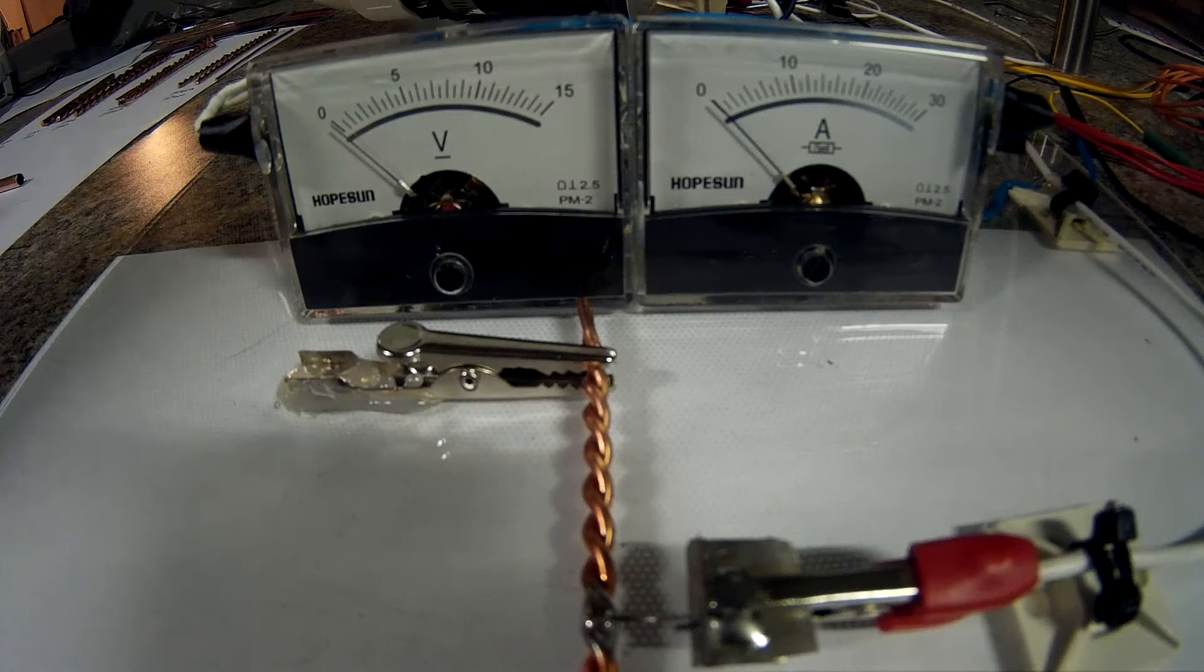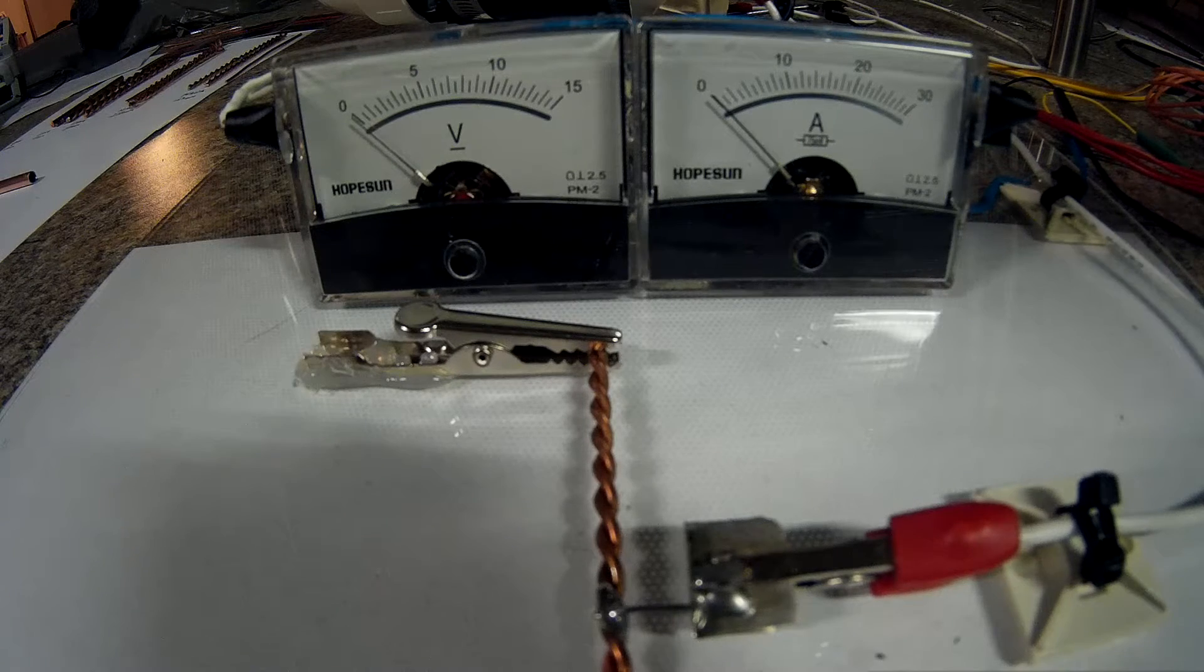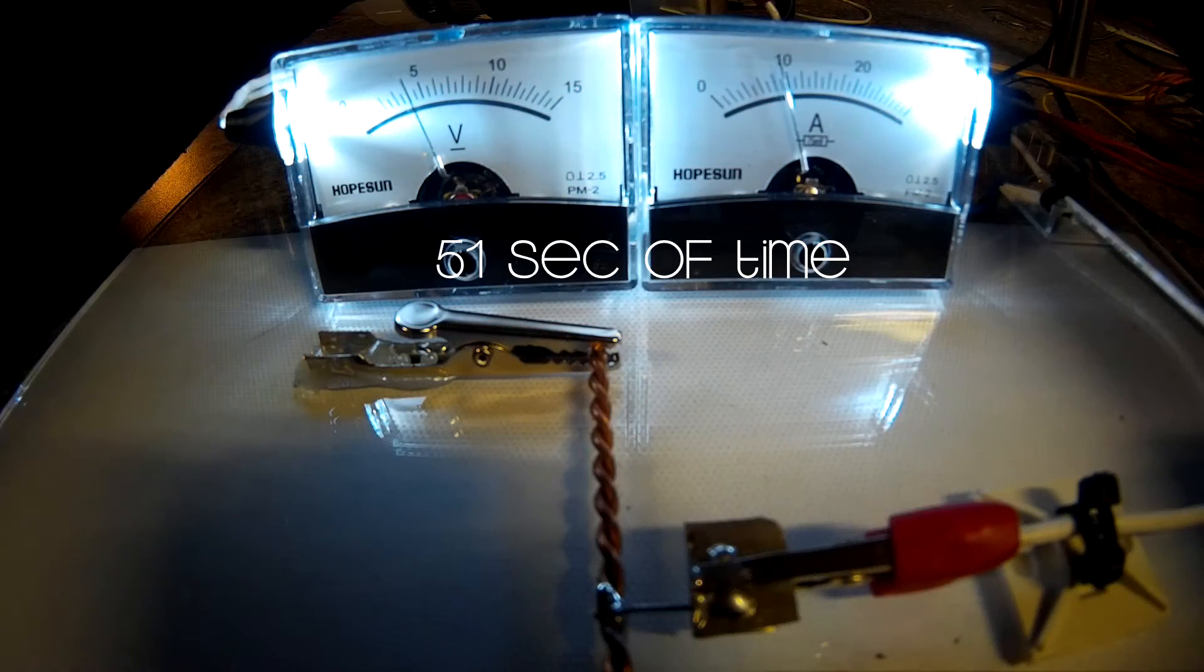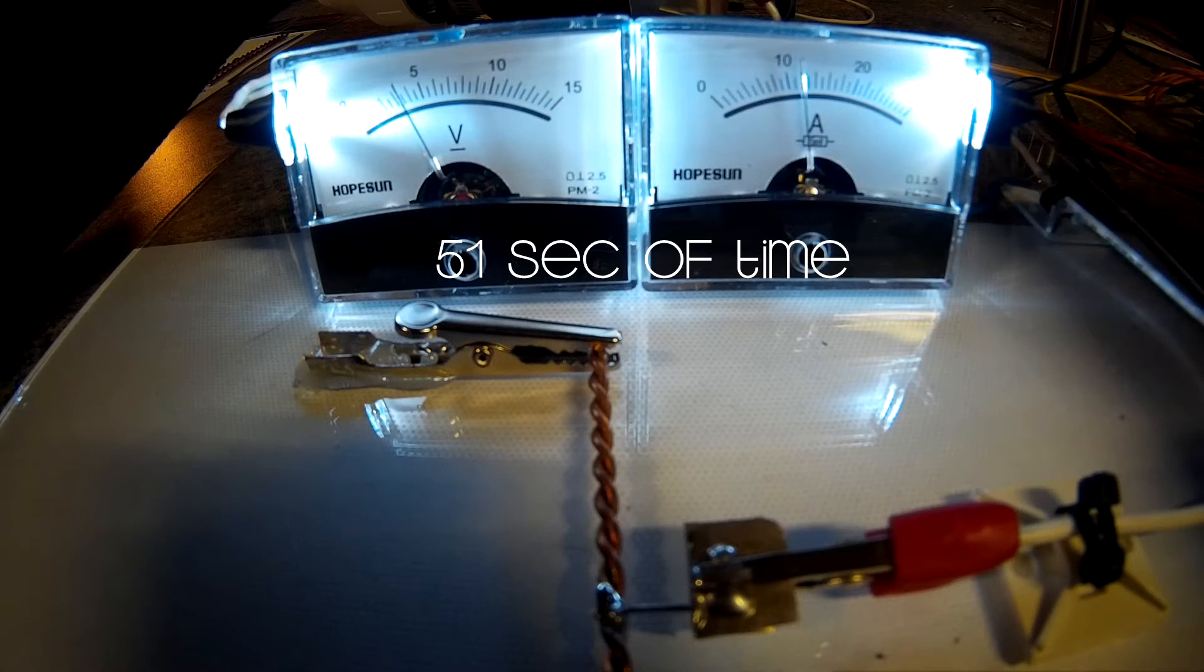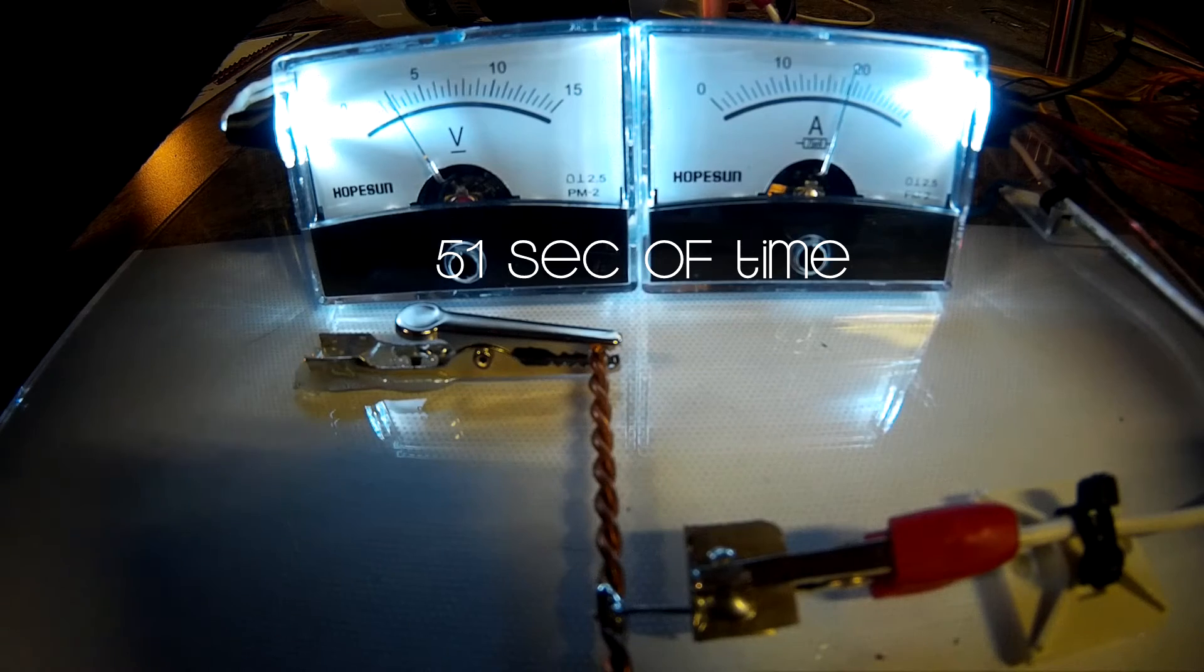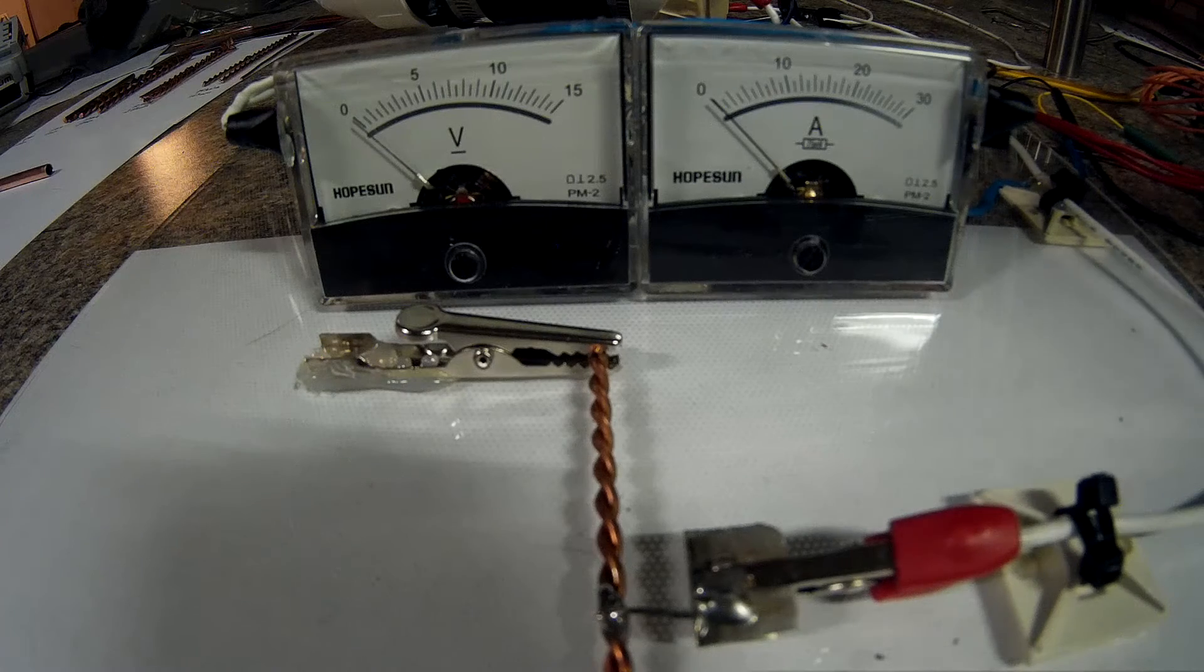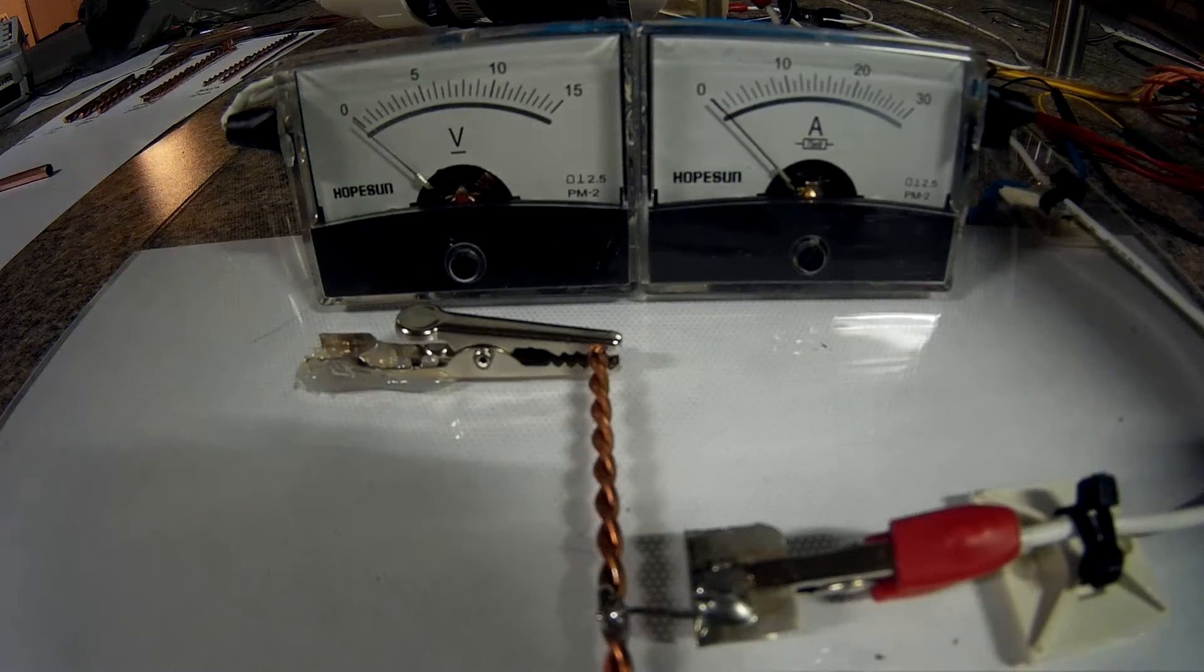Next test is the 14 gauge twisted pair. This gap is set at 7.03 millimeters. Contact. Okay, I did see the fuse glowing around the 19 to 20 amp, but I blew the wire up here.